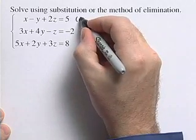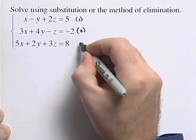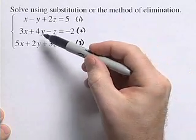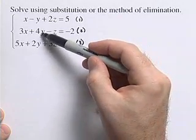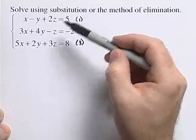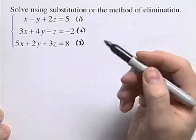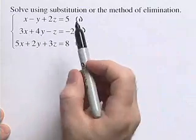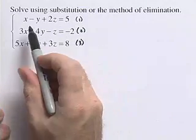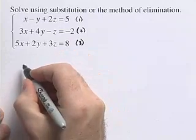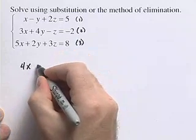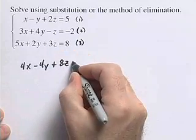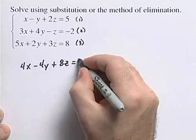We number our equations: this is equation 1, this is equation 2, this is equation 3. The first thing we want to do is eliminate the variable y from the second and third equations, using our first equation. To eliminate y from the second equation, we're going to multiply equation 1 by 4, giving us 4x minus 4y plus 8z equals 20.